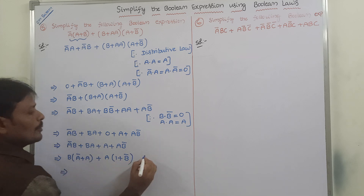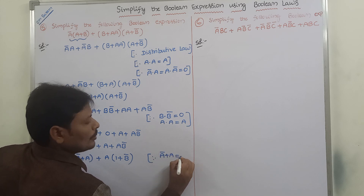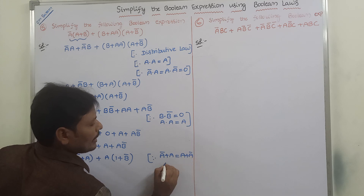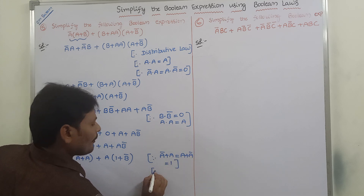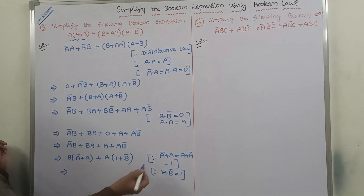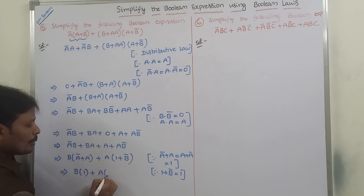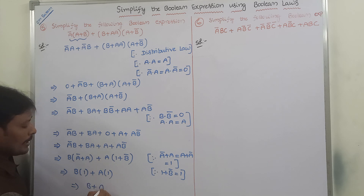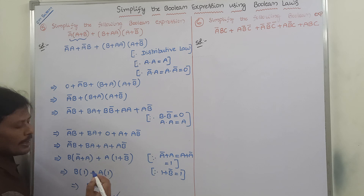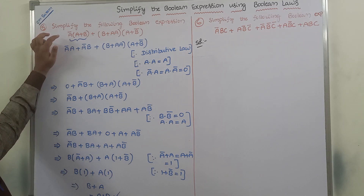We already know that A-bar plus A equals A plus A-bar equals 1. Another formula: 1 plus something equals 1. According to these two formulas we get B·1 plus A·1. So B·1 is nothing but B, and A·1 is nothing but A. So B plus A, and finally we are getting A plus B. A plus B is the answer after simplification of this Boolean expression.